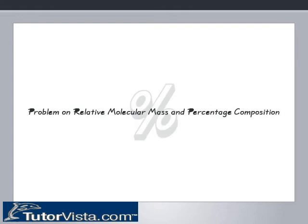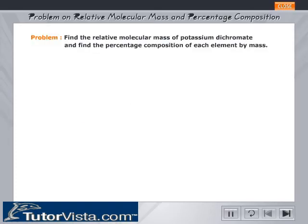Problem on Relative Molecular Mass and Percentage Composition. Here is the problem. Find the relative molecular mass, RMM, of potassium dichromate and find the percentage composition of each element by mass.